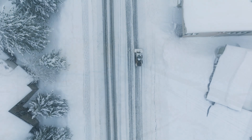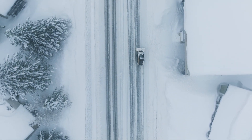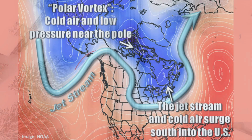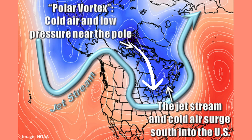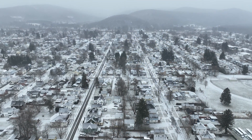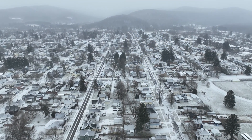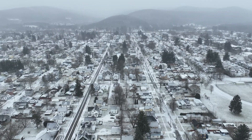In North America, the polar jet stream is becoming more amplified. Strong ridges are forming in the western United States, while deep troughs are developing over central and eastern parts of the country. These troughs allow Arctic air to move south, increasing the risk of cold outbreaks and winter storms. When storm systems travel along this temperature boundary, snowfall potential increases significantly.